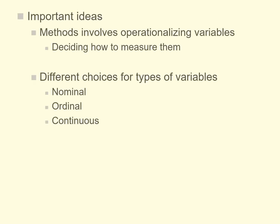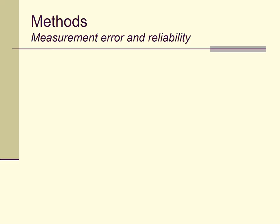To summarize: the methods section of the research process involves operationalizing variables — deciding how we're going to measure them. There are different choices: nominal, ordinal, and various forms of continuous scaling. When thinking about research methods, we're thinking about how to operationalize variables, what sort of scaling to use — whether it's drug dose or level of depression — and we should also be thinking about measurement error.